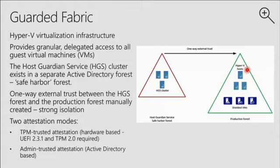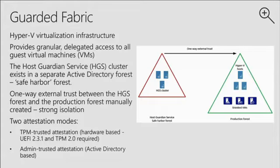After that, you have to implement a one-way external trust between the isolated Host Guardian Service safe harbor forest and the production forest. This is mandatory. We are using two attestation modes: TPM trusted attestation or admin trusted attestation. The issue that guarded fabric is solving is basically protecting the virtual environment from malicious admins, as well as preventing machines from being exported or copied from a data center and started on another host machine which is not trusted.